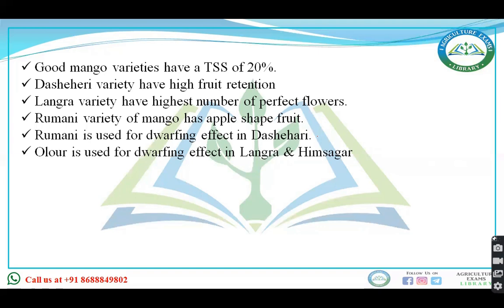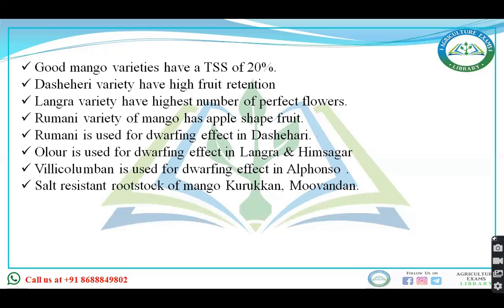Olive oil is used for the dwarfing effect in Langra and Himsagar. Billy Columban is used for the dwarfing effect in Alphonso.